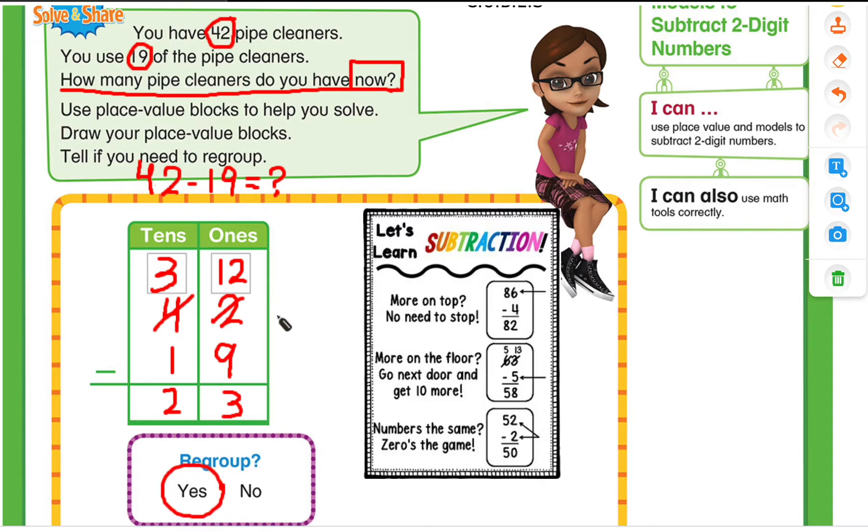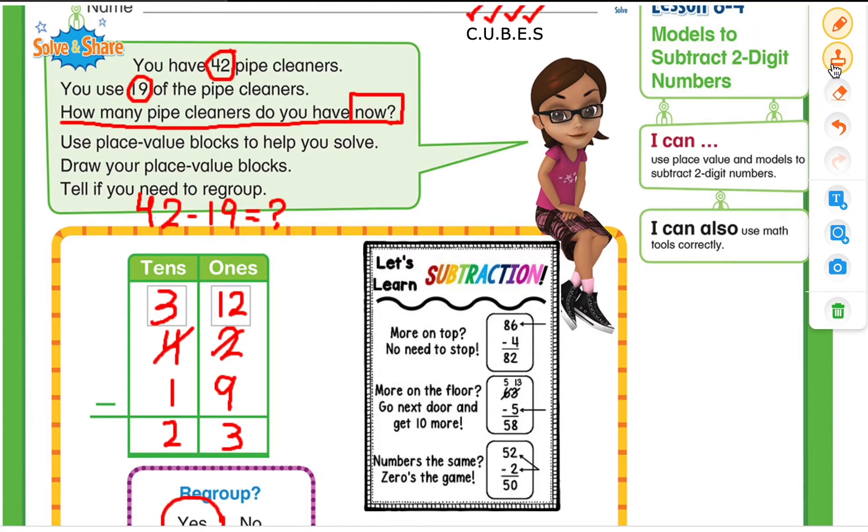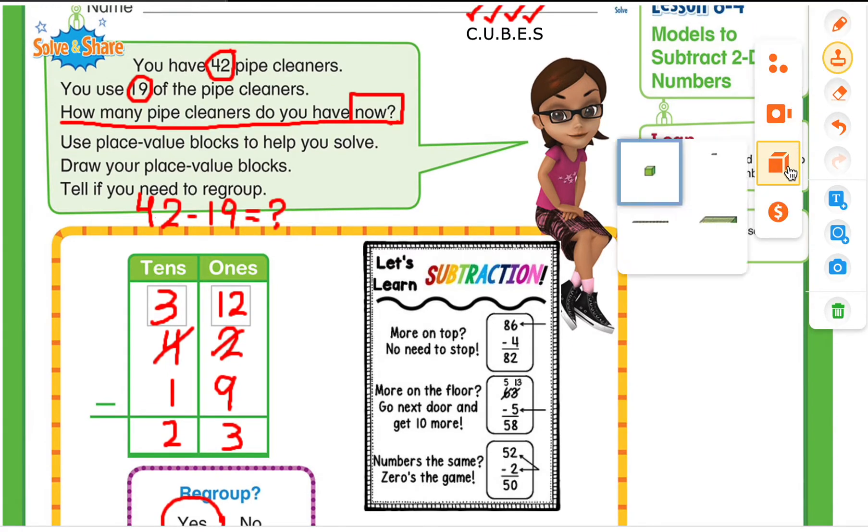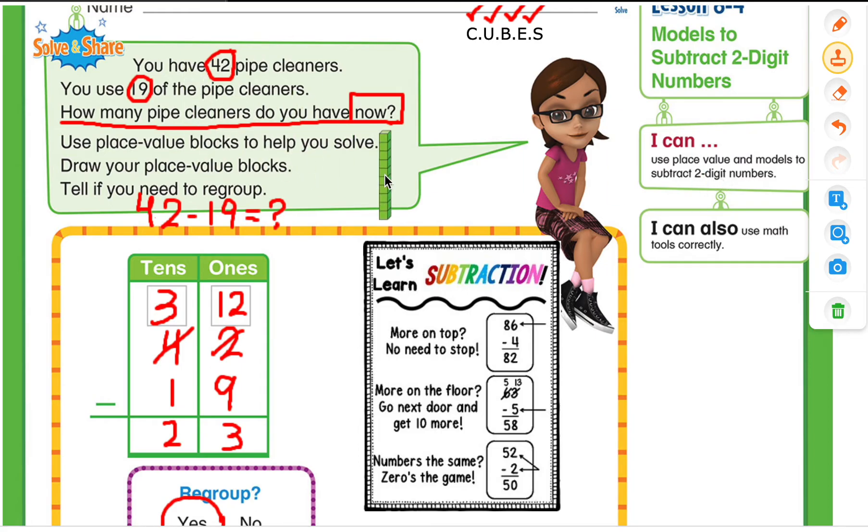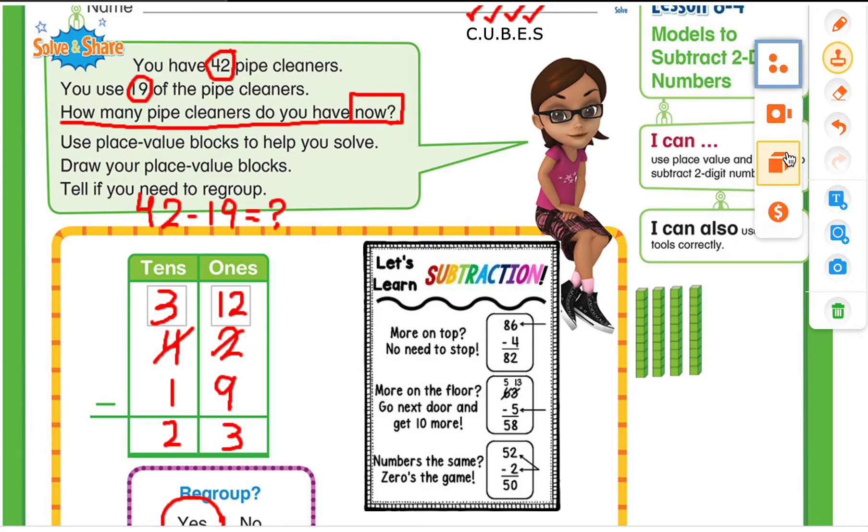So this is the place value strategy that we have used to show the regrouping. But they also want us to model the subtraction for this one. So that means we need to use our place value blocks. So we're going to go to manipulator blocks and grab our 10's first. So we had 42. So I am going to show 42. 42 has four 10's. 10, 20, 30, and 40.